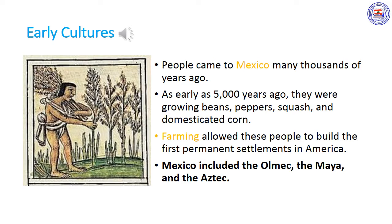Early cultures. People first came to Mexico many thousands of years ago. As early as 5,000 years ago they were growing beans, peppers, and squash. They also domesticated an early form of corn. Farming allowed these people to build the first permanent settlements in the Americas. Mexico's early cultures included the Olmec, the Maya, and the Aztec.